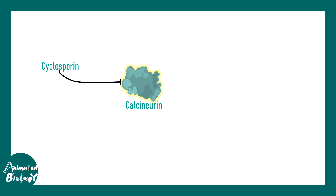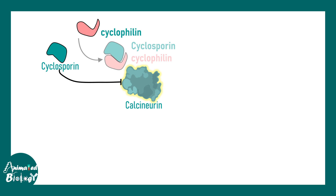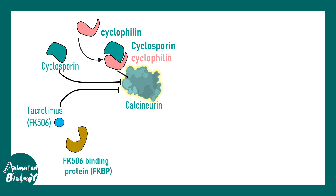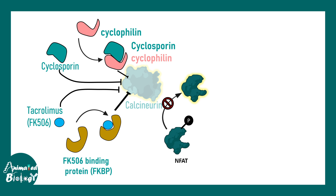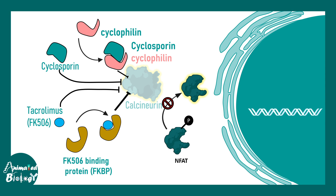To recap: cyclosporine interacts with a compound called cyclophilin, and this complex prevents calcineurin activity. Tacrolimus interacts with an FKBP (FK506 binding protein), and that also prevents calcineurin activity. Overall calcineurin activity is prevented. As a result of this, NFAT cannot be dephosphorylated, cannot translocate into the nucleus, and cannot transcribe the gene for interleukin-2.